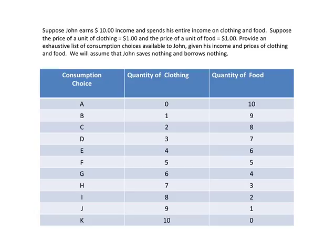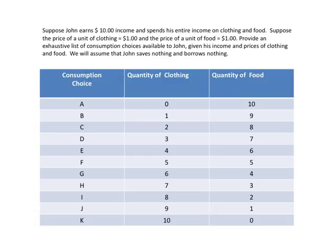Suppose John's income doubles from five dollars to ten dollars. We hold all other things the same — price of clothing and price of food are still one dollar per unit. Based on these new numbers, when John's nominal income is ten dollars and price of clothing equals price of food equals one dollar, we can create a table listing an exhaustive set of consumption choices available to John.